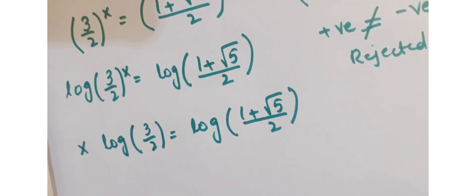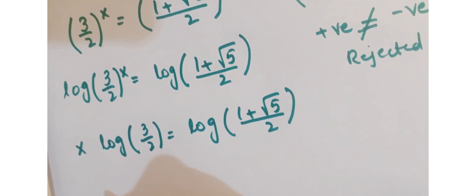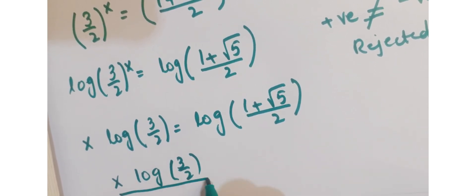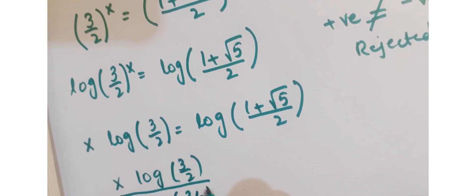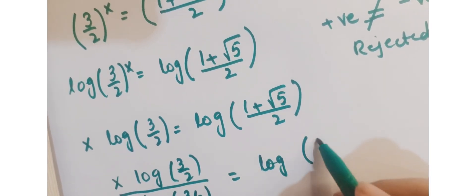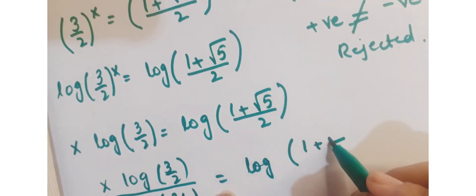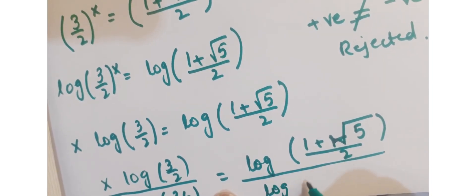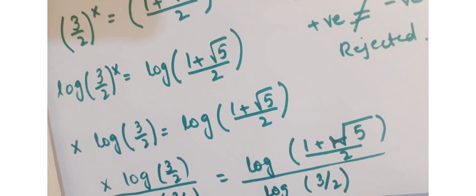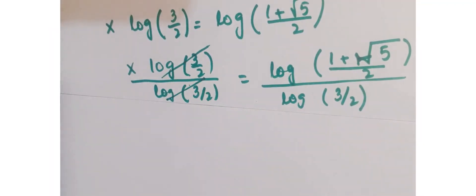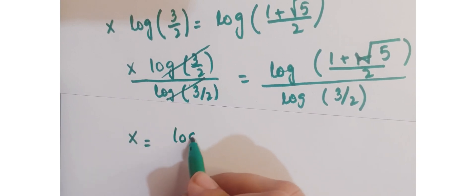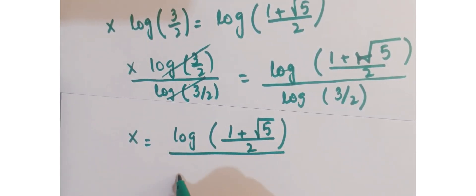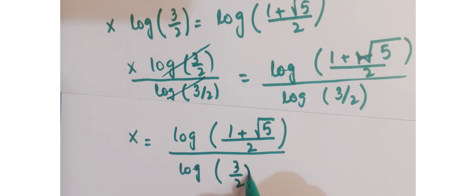Now, in order to remove log of 3 upon 2 from the left hand side, just divide by log of 3 upon 2 on both sides. So this term and this term get cancelled. So x equals log of 1 plus under root 5 upon 2, divided by log of 3 upon 2.